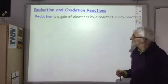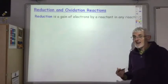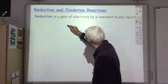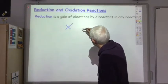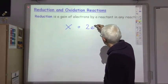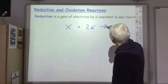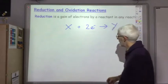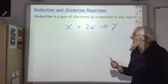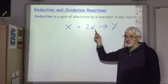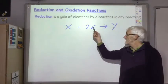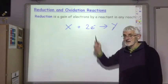In reduction reactions, the reactant gains electrons. For example, substance X gains two electrons and turns into substance Y. I want you to focus on the electrons — this is what it looks like when a substance is gaining electrons. The electrons appear here on the left hand side of the arrow.